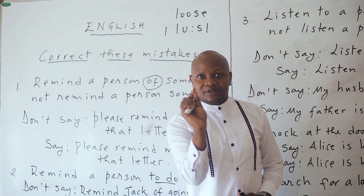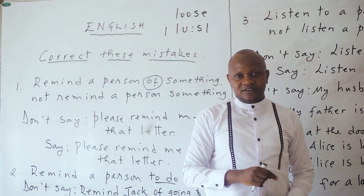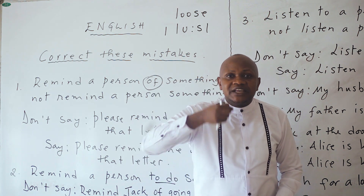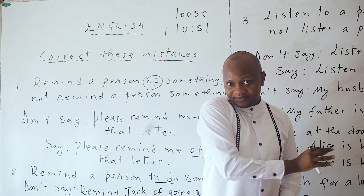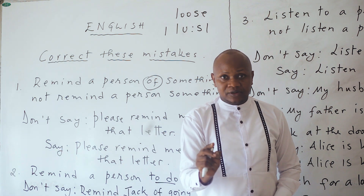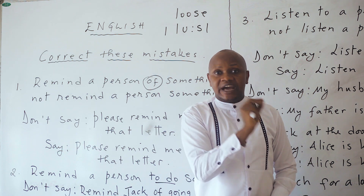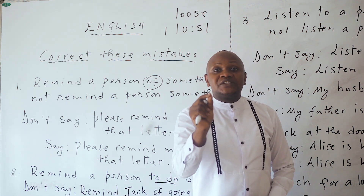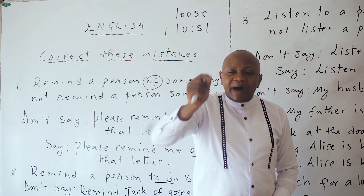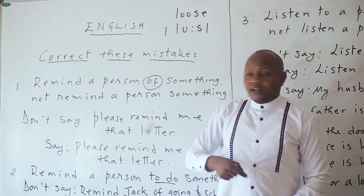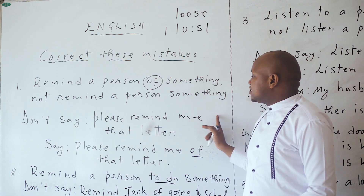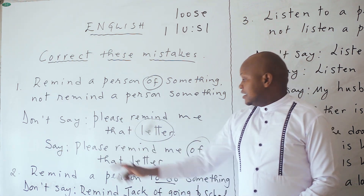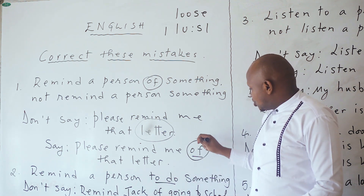For example: Let me remind you of his car. His car is red and white. You are reminding that person of someone's car. Let me remind you of the dress she was wearing last week. Her dress was white. To remind someone, or to remind a person of something — please remind me of that letter. Remind me of that letter. Don't forget this 'of.'